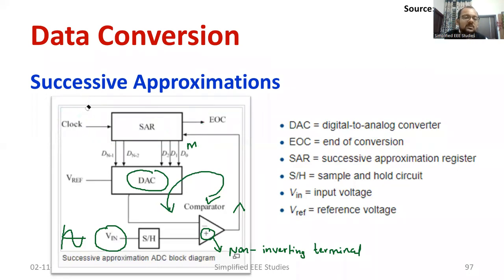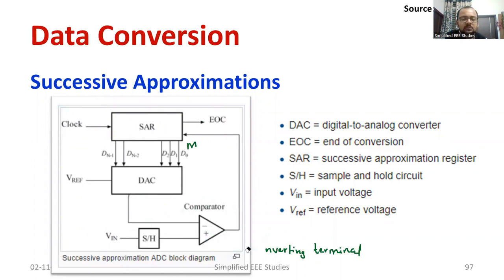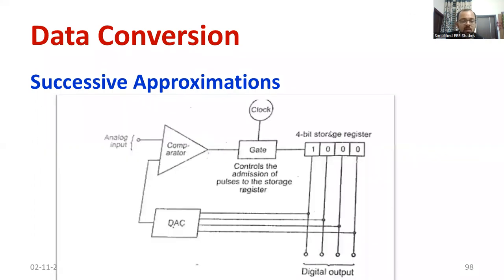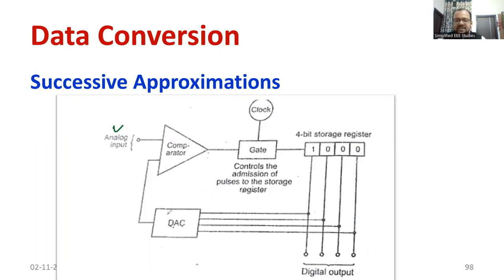If you are not comfortable with this block diagram, let me show you another one. Any block diagram can be drawn from an exam point of view. Here you can observe another type of block diagram. The major elements are: analog input, and the DAC output from the previous state, both given to the comparator.